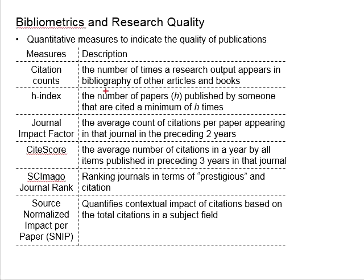Next, we talk about the CiteScore. It refers to the average number of citations in a year by all items published in the preceding three years in that journal.